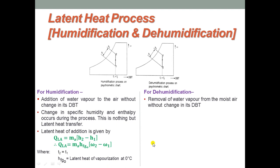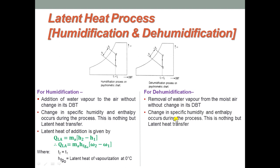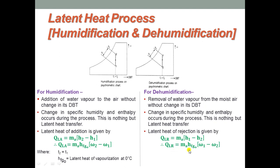Similarly, for dehumidification, water vapour is removed from moist air without change in dry bulb temperature. Specific humidity and enthalpy change. The equation is similar but becomes Q = ma × (H1 − H2), or ma × HFG0 × (ω1 − ω2), where T2 equals T1 and HFG0 is the latent heat of vaporization at 0°C. In humidification we increase moisture content; in dehumidification we reduce it — both based on the latent heat process.